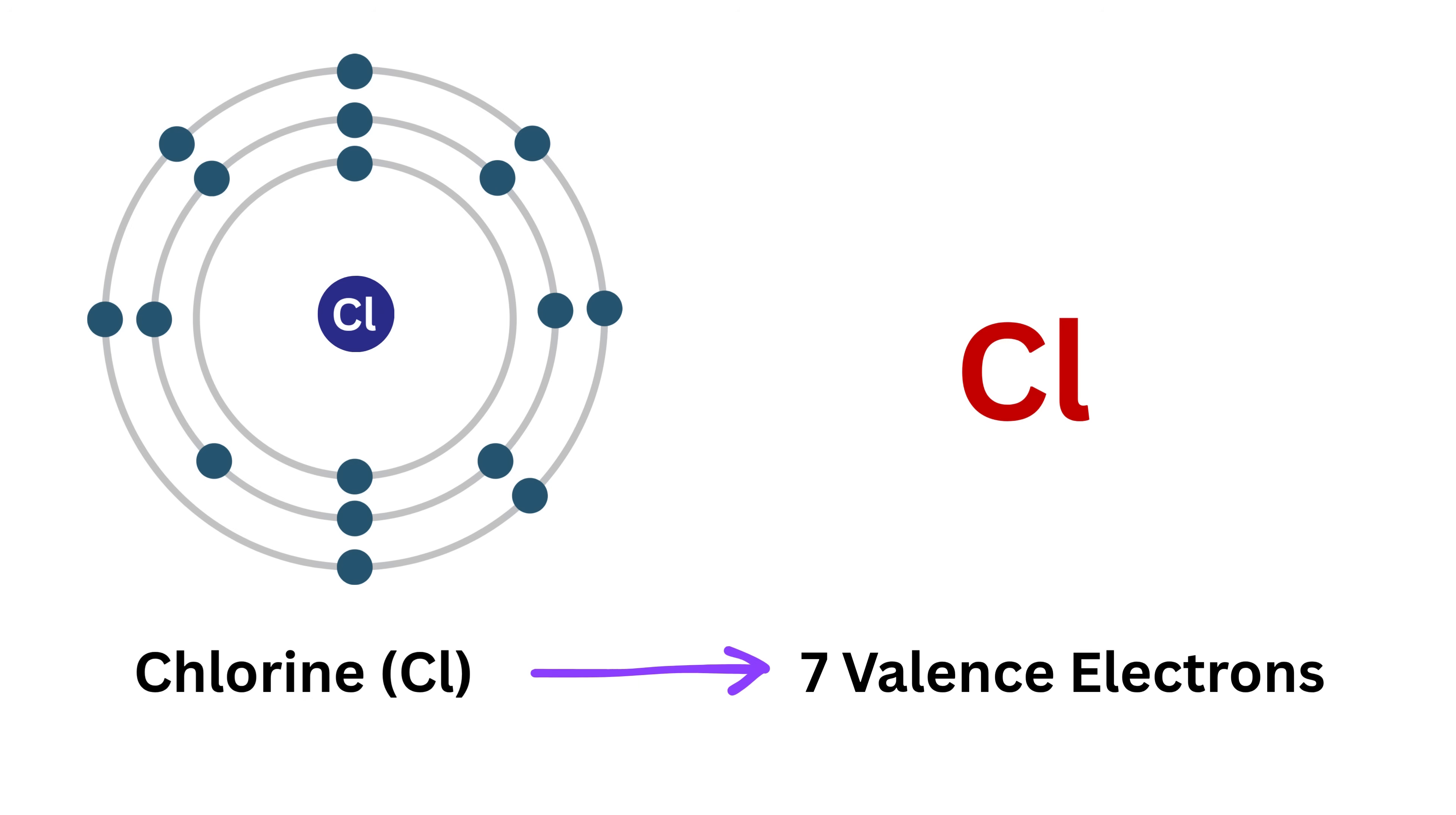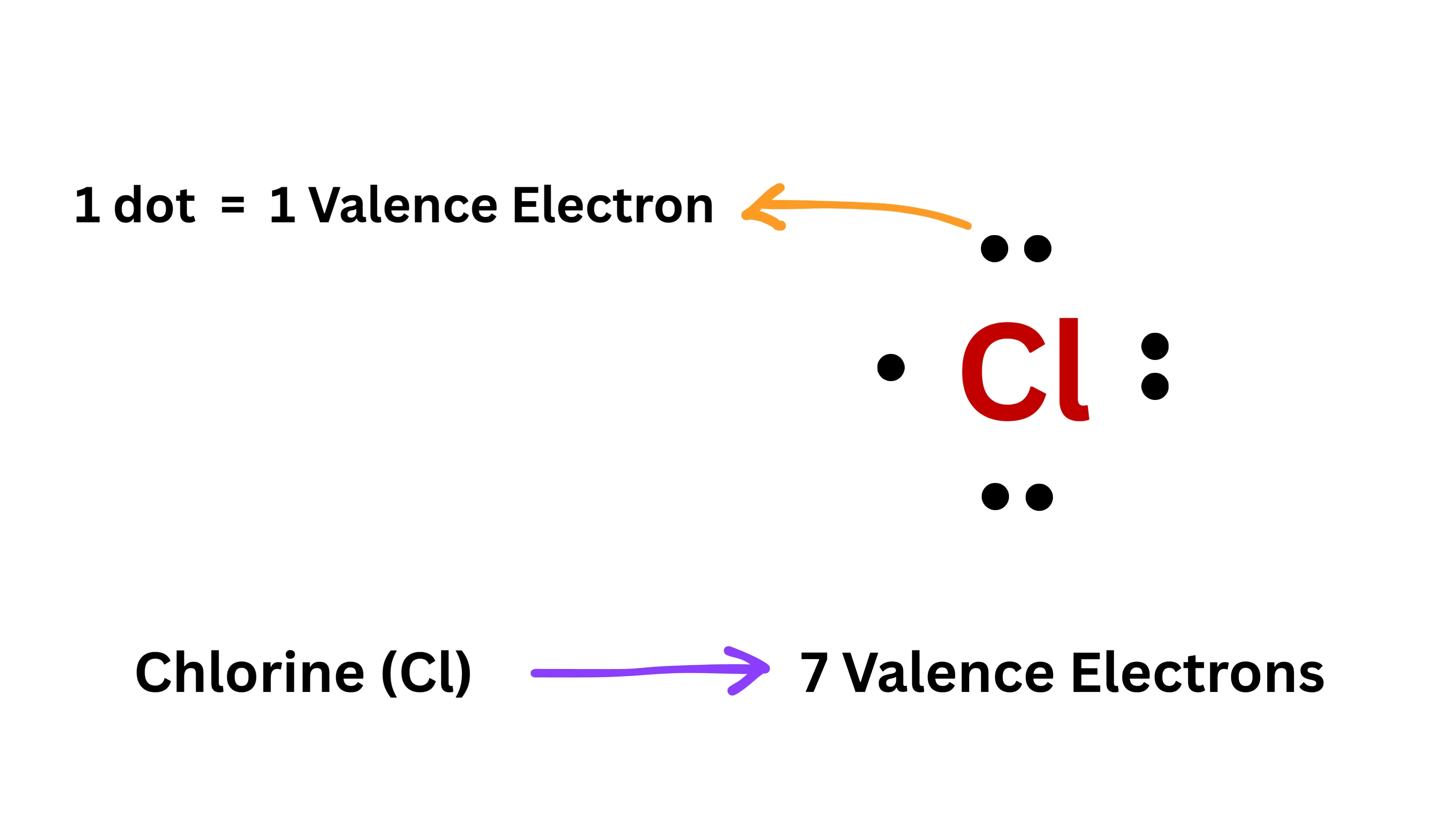Now, we don't just put the dots randomly. Imagine an invisible square box around the element's symbol—one side on top, one on bottom, and one on each side. Each side can hold up to two dots. You should place the dots one by one around the four sides before you start pairing them. So you'll place one dot on the top, one on the right, one on the bottom, one on the left, and then start pairing until all seven are placed. That's how you get a neat and clear Lewis diagram for chlorine.